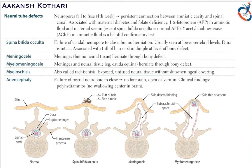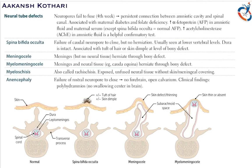The various neural tube defects include spina bifida occulta, meningocele, myelomeningocele, myeloschisis, and anencephaly. In normal anatomy, the spinal cord is present in the spinal canal, covered by dura mater and leptomeninges, with transverse processes and skin on the posterior aspect. In spina bifida occulta, there is a failure of the caudal neuropore to close.